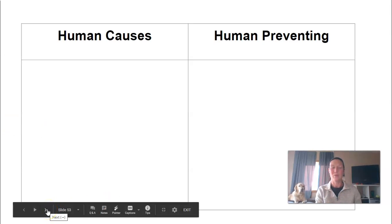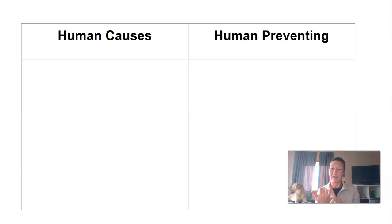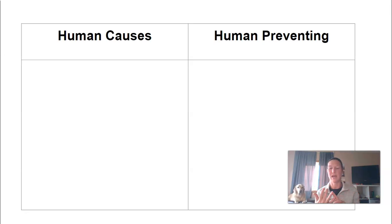Before I get into the lecture portion, please make sure that you've watched the two YouTube videos that I posted first. There's one on soil and water and how humans interact with those elements for erosion to happen, and then one on how we can help prevent erosion from happening and how we can save our soil. Watch those two first, then watch this, and we'll take notes here at the end.